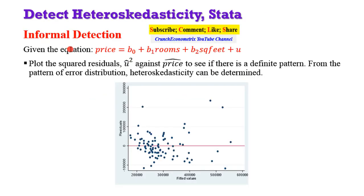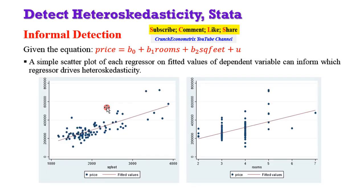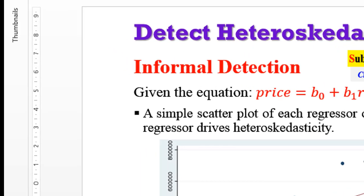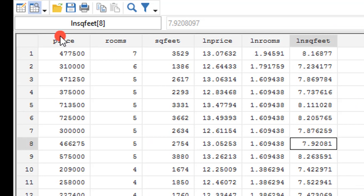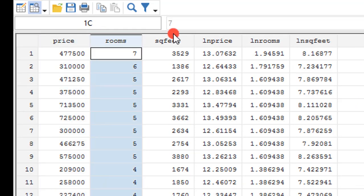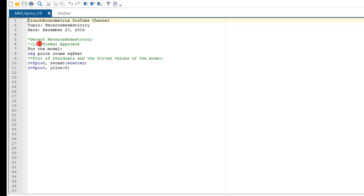For informal detection, we are going to look at the plot of the squared residuals against the predicted value of the dependent variable from this particular model. We have Price as the dependent variable, and Rooms and Square Feet as the two regressors. We will also plot each regressor against the fitted value of the dependent variable using a scatter plot, so that we can know which of them drives heteroscedasticity. From the data editor, these are the variables: price, rooms, and square feet. I have the codes already written out in the do file.